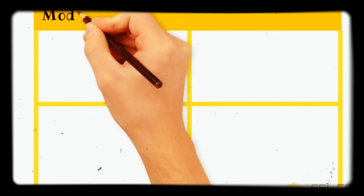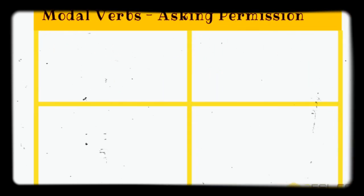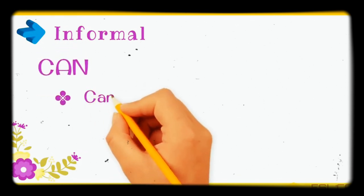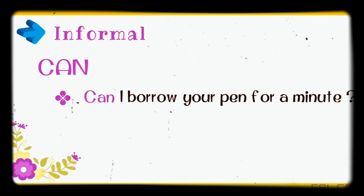Here is another list of modal verbs that are very helpful. Modal verbs are used to ask for ijazat — permission. For informal or friends-related situations, use 'can'. For example: 'Can I sit here?', 'Can I use your pen?', or 'Can I borrow your pen for a minute?' With friends, use 'can'.